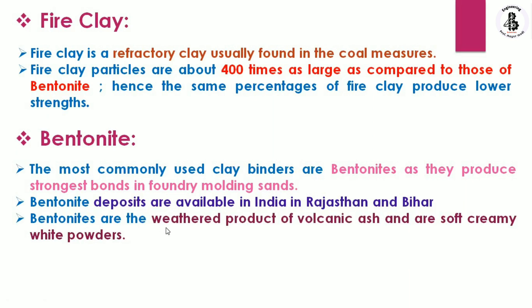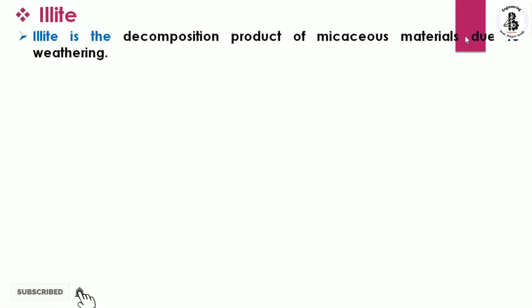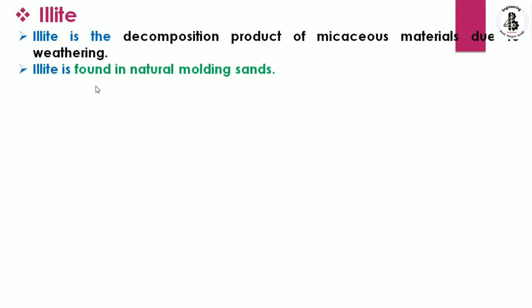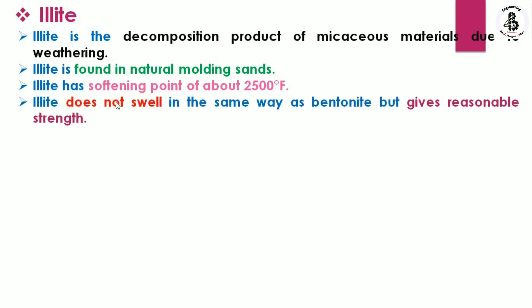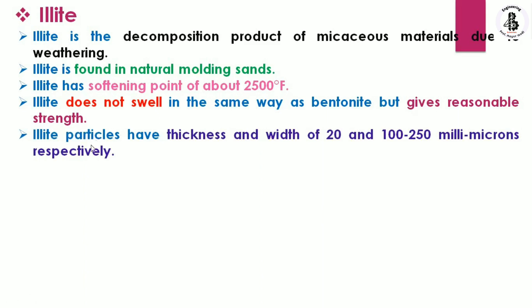Bentonites are the weathered products of volcanic ash and are soft, creamy white powders. Alite is a decomposition product of micaceous materials formed due to weathering. Alite is found in natural molding sands and has a softening point of around 2500°F. It does not swell in the same way as bentonite but gives reasonable strength. Alite particles have a thickness and width of 20 and 100–250 millimicrons respectively.